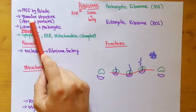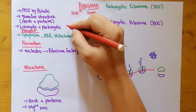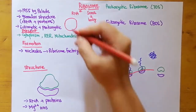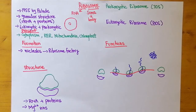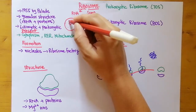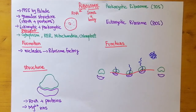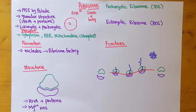It is a granular structure present inside the cytoplasm of a cell. For example, in a cell with a nucleus, inside the cytoplasm we can find small dot-like structures — small grain-like structures — and these are known as ribosomes. Ribosomes are present in both eukaryotic and prokaryotic cells.